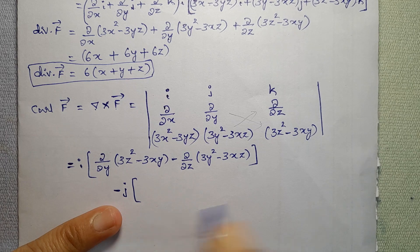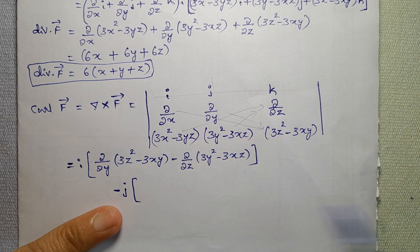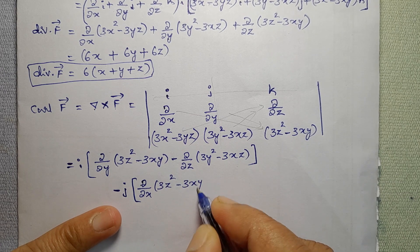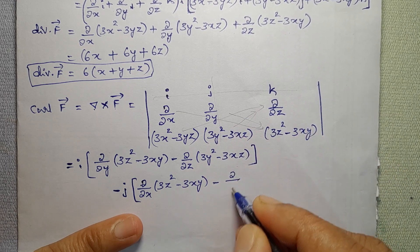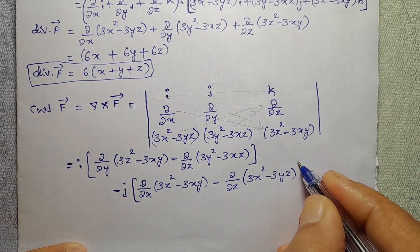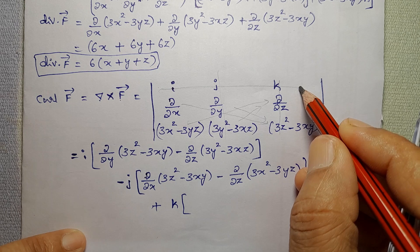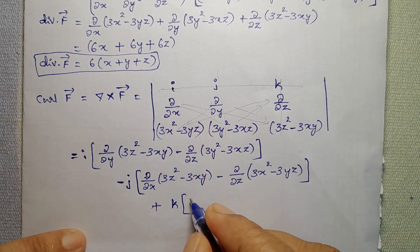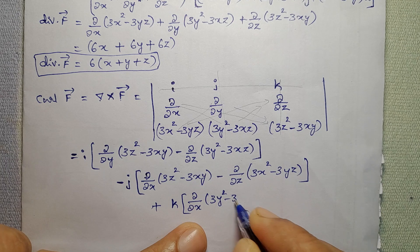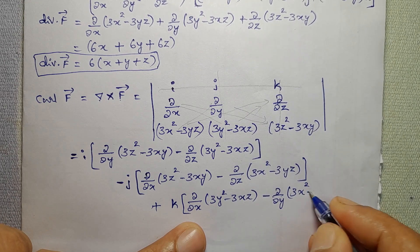Minus j component: [d/dx(3z² − 3xy) − d/dz(3x² − 3yz)]. Partial derivative of (3z² − 3xy) with respect to x is −3y. Partial derivative of (3x² − 3yz) with respect to z is −3y. So j component: −3y − (−3y) = 0. Plus k component: [d/dx(3y² − 3xz) − d/dy(3x² − 3yz)].